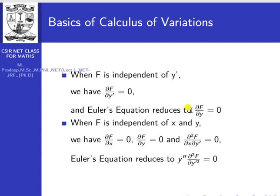The fourth case: when F is independent of both x and y — meaning F is a function of y' only — then ∂f/∂x = 0, ∂f/∂y = 0, and ∂²f/∂x∂y' = 0. The Euler equation reduces to y'' · (∂²f/∂y'²) = 0, or simply y'' = 0, giving the solution y = ax + b.